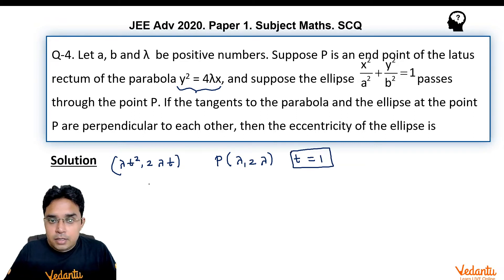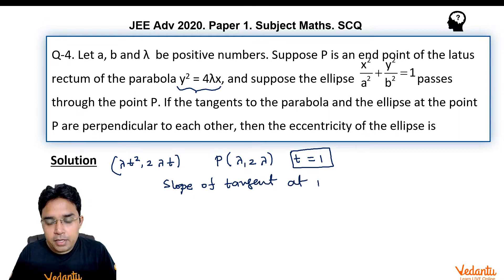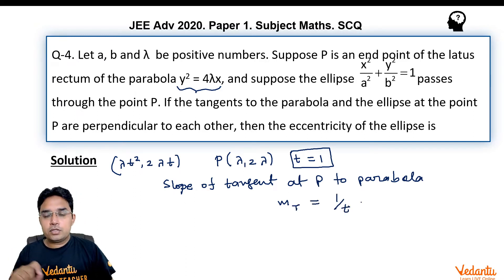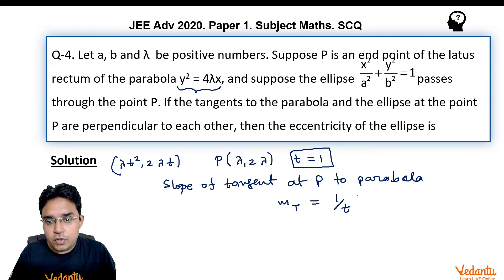Now, first let me write the slope of tangent at P point to parabola and that is one very standard result which we remember by 1 upon t. At t point slope of tangent is 1 upon t. So, here it would be 1 only.